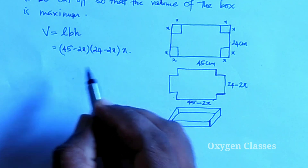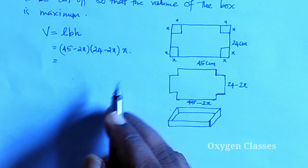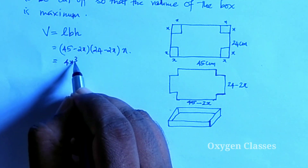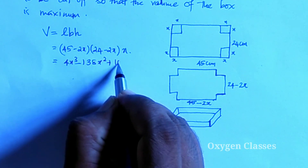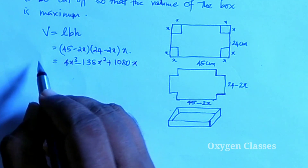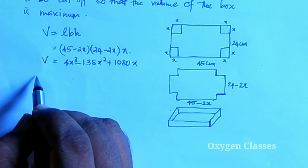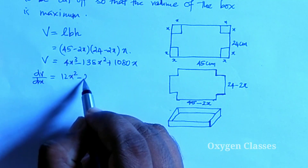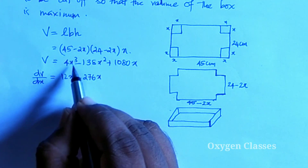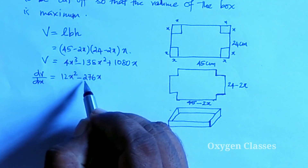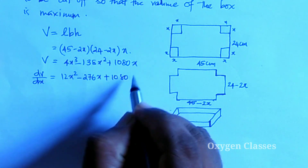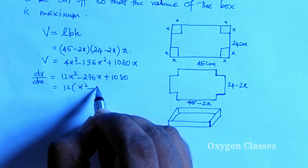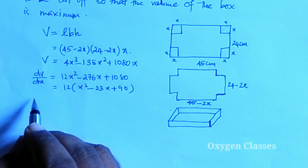We multiply out the expression. After expanding, V = 4x³ − 138x² + 1080x. Differentiating gives dV/dx = 12x² − 276x + 1080. We factor out 12 to get 12(x² − 23x + 90).